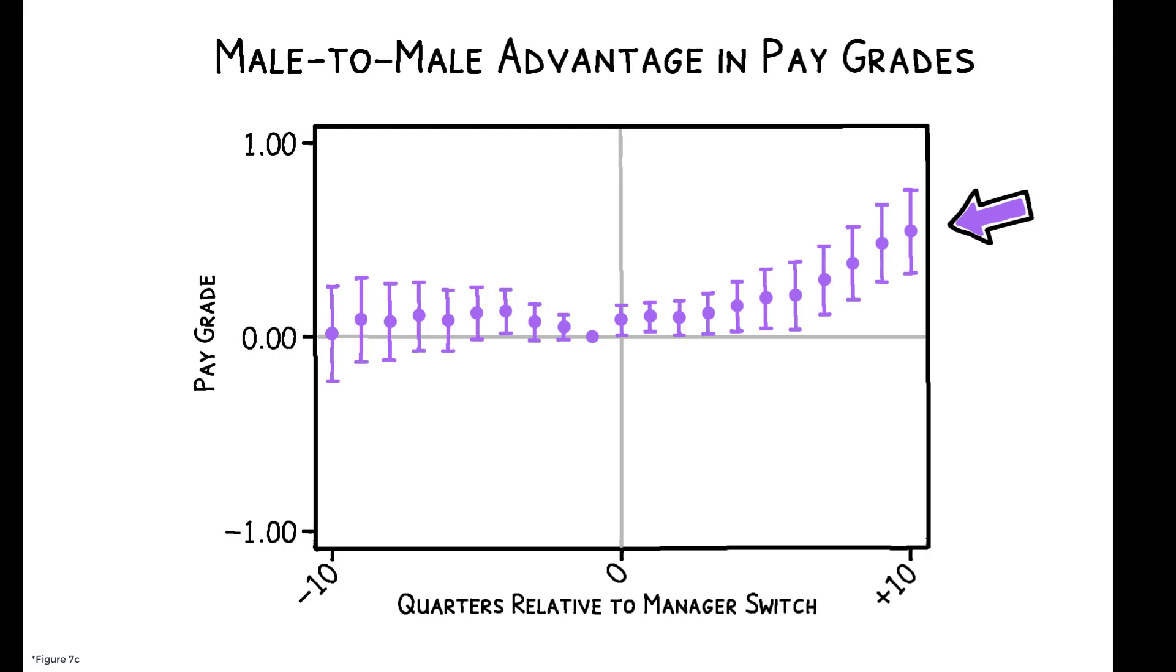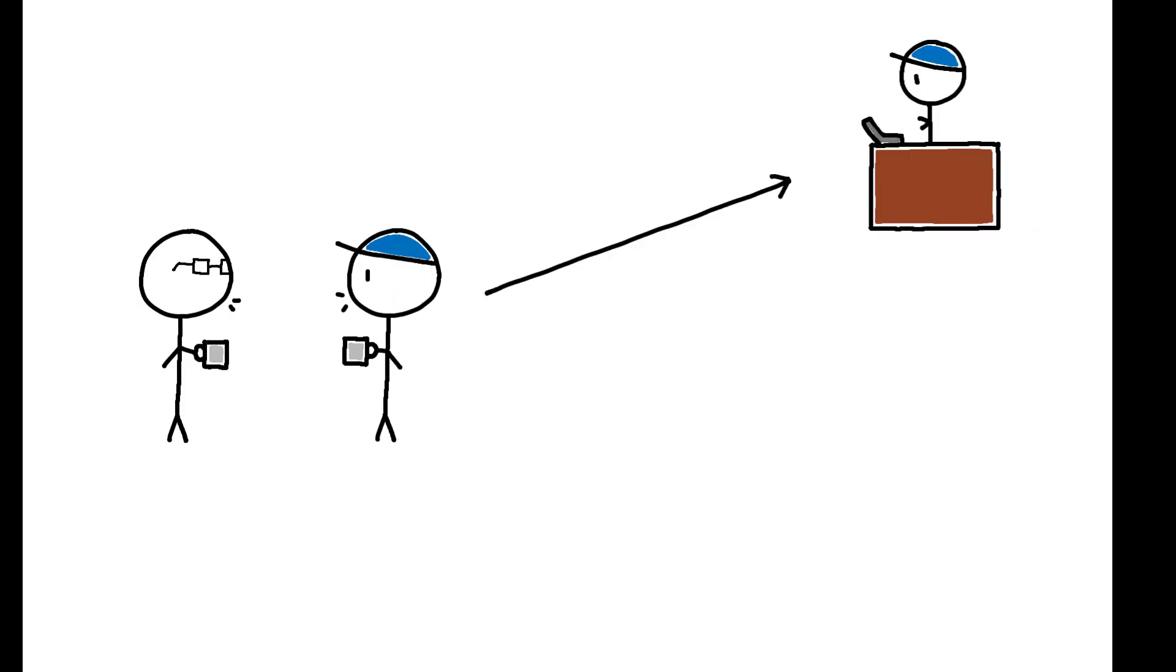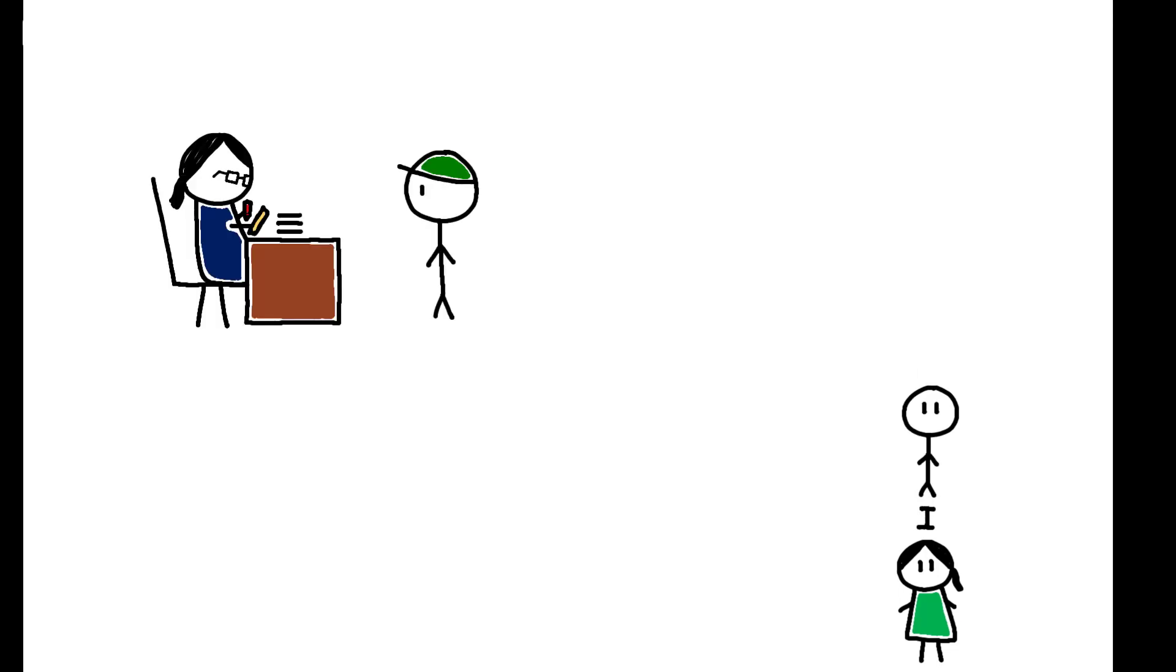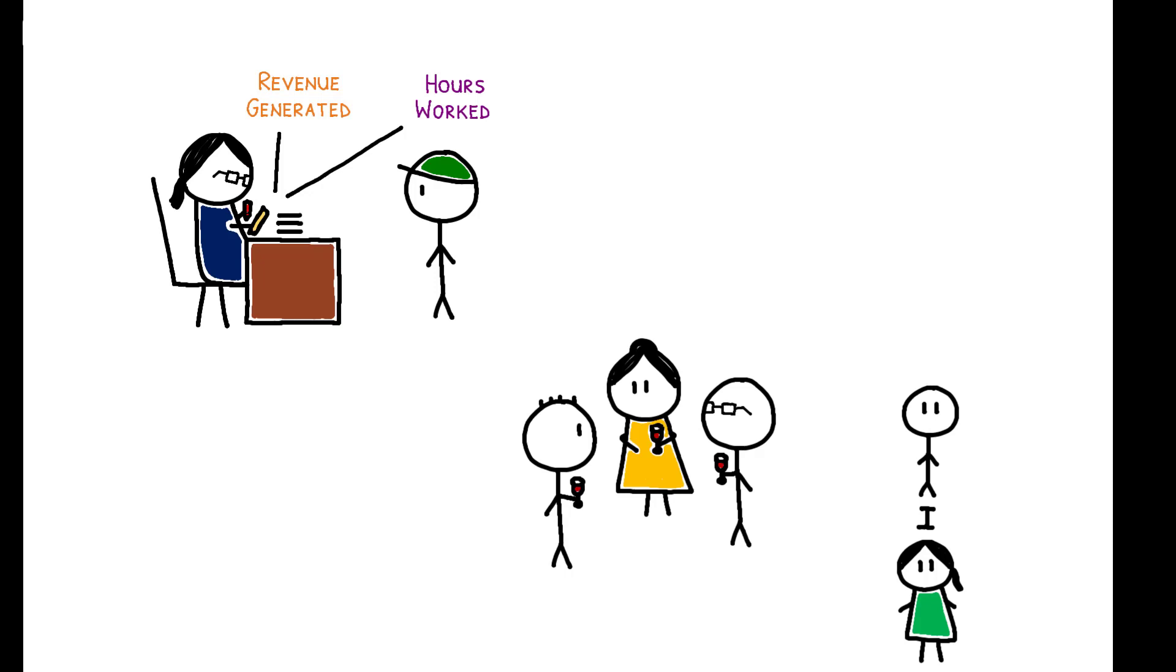A back-of-the-envelope calculation suggests that removing this effect would reduce the firm's gender pay gap by 40%. Thus, this paper argues that social interactions can affect employees' careers and contribute to the gender gap in promotions. This implies that a range of corporate policies might effectively reduce the gender gap, including standardizing the review process to use objective indicators and leveling the opportunities for socializing at work.